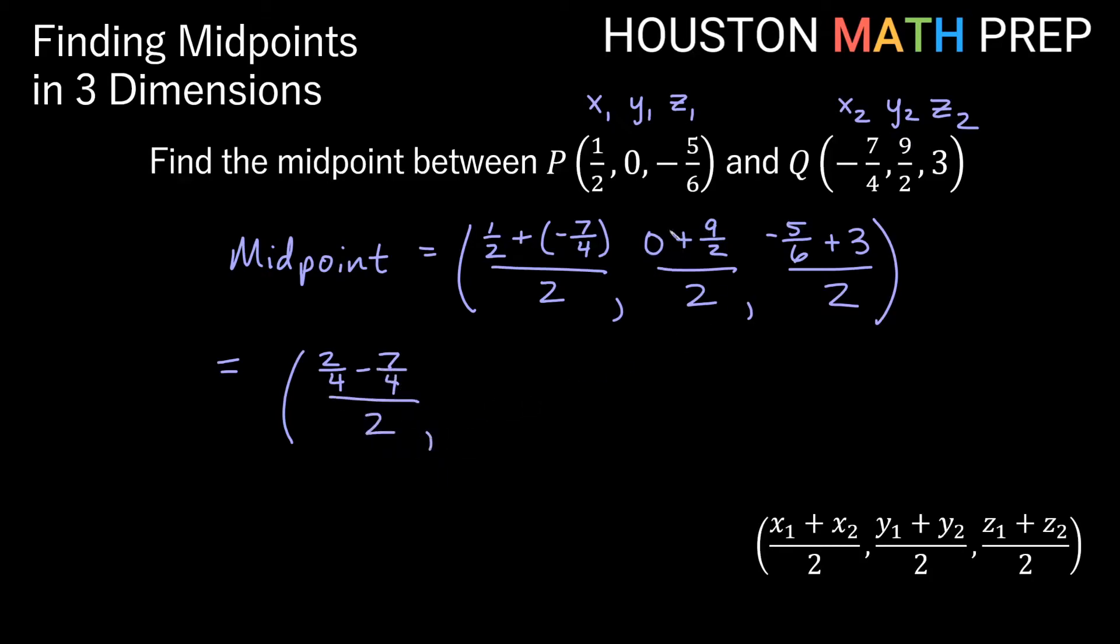And then here, plus 0 is just going to leave us with 9 halves there over 2. And our z, if we think of this like 3 over 1 and multiply by 6 on the top and the bottom, then we'll have negative 5 over 6 plus 18 over 6 over 2.